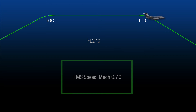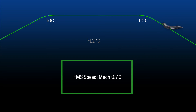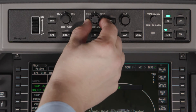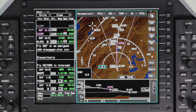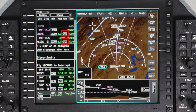The FMS target speed for the descent is Mach 0.70 until reaching the crossover altitude at flight level 270, and then transitions to 280 knots. To fly faster than Mach 0.70 or 280 knots during the descent, pilots will need to set a manual speed target. The FMS will also comply with any speed restrictions on the arrival as long as they exist in the flight plan.